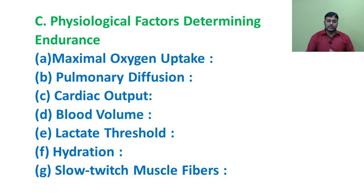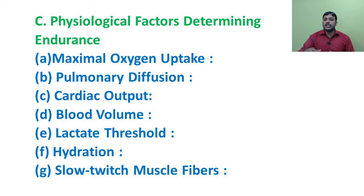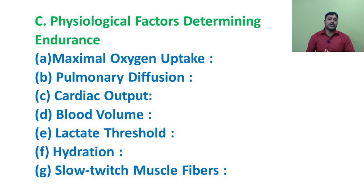Third factor: cardiac output. Cardiac output refers to the efficiency of the heart to circulate blood to the body per minute. It is calculated by the product of heart rate and stroke volume, reported in liters per minute. A person having better cardiac output has better circulation, leading to better oxygen transport and better endurance.